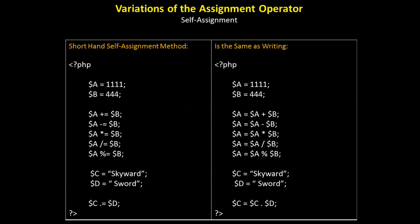In addition, there are self-assignment variations when using the assignment operator. Look at the following table. In the left column, we have a shorthand self-assignment method. And in the right column, we have the way you would normally write out an expression. So we have two variables, A and B, with values 1111 and 444. Now look at the first example. Variable A plus equals B. That's the same as writing out A is equal to A plus B.